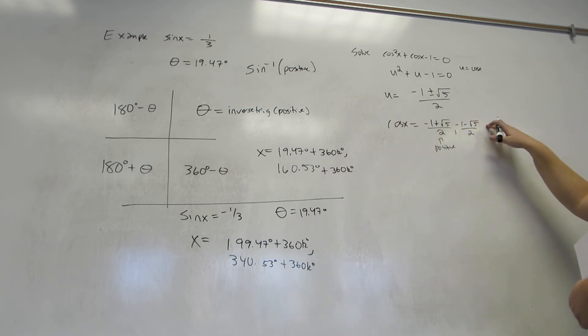Here, negative 1 minus 2 something is negative 3 something. Divided by 2 is a number like negative 1.5, which is not in the range of cosine. So, that's not actually a possible answer.